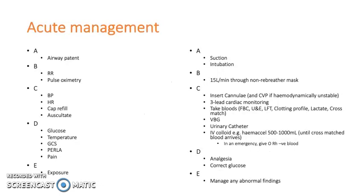Acutely manage this patient beginning with ABCDE. A — airway: is it patent? Would you need suction or intubation? B — breathing: assess respiratory rate and pulse oximetry; supply 15 litres per minute of oxygen through a non-rebreather mask. C — circulation: assess blood pressure, heart rate, cap refill, and auscultate the heart. Insert a cannula, add 3-lead cardiac monitoring, take bloods: FBC, U&E, LFT, clotting profile, lactate, and cross-match.